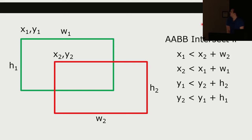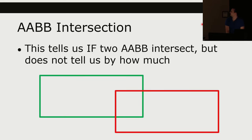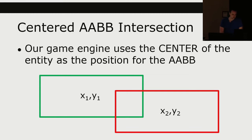This tells us if the two things intersect, but it doesn't tell us by how much. To get the area of overlap, what we're going to do in our game engine is instead of using x1, y1 as the top left of a rectangle, we're going to use it as the center of a rectangle. That affords some nice mathematics at the expense of a little extra mental load — now x1, y1 is the center of a rectangle.